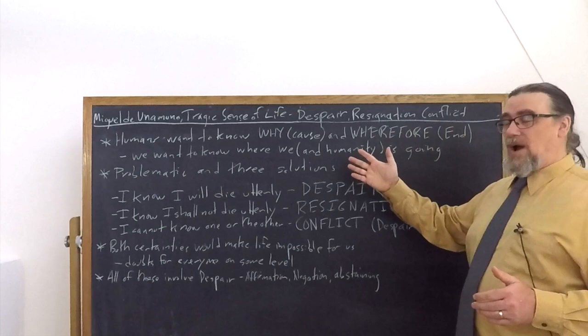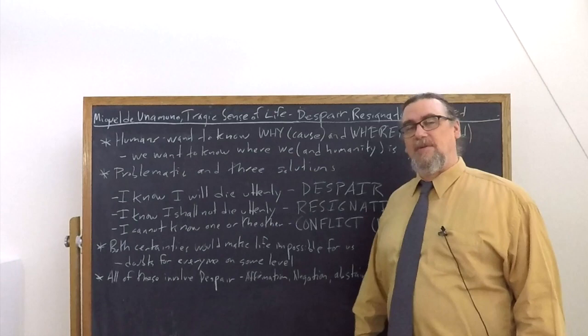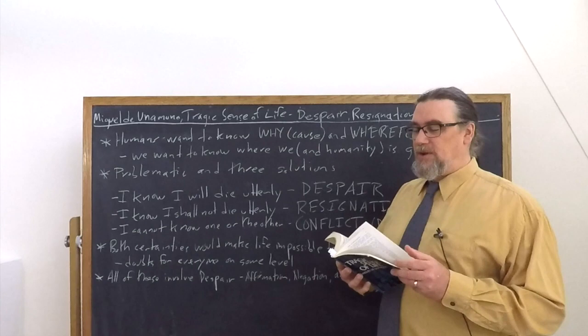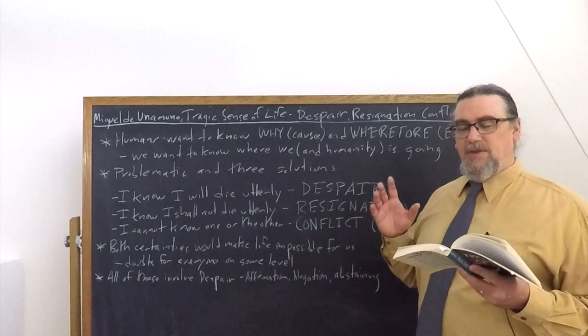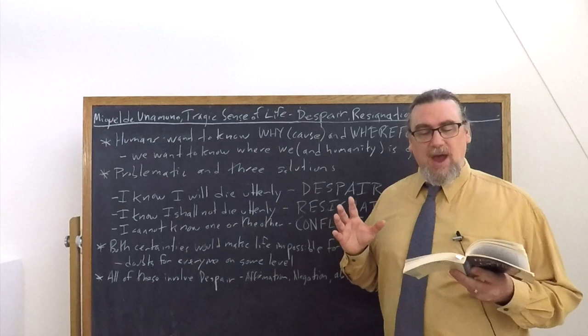So there's a problematic being laid out according to Unamuno. He says there's three fundamental solutions. This is early on in the book, chapter two, towards the end of the chapter. He asks: why do I wish to know whence I come and whither I go? For I do not wish to die utterly, and I wish to know whether I am to die or not definitely. If I do not die, what is my destiny? If I die, then nothing has any meaning for me.